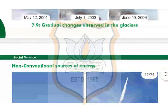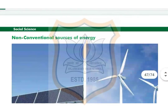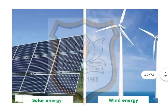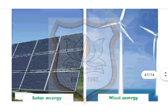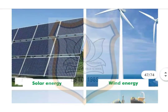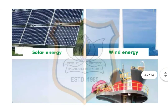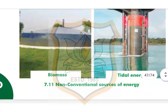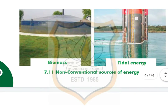Now, non-conventional sources of energy — you can see the picture given in the book. These include solar energy, wind energy, biomass, and tidal energy.